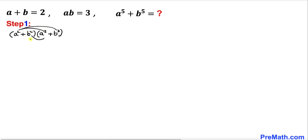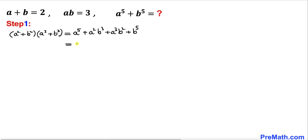Now let's do the double distribution and multiply them out. We get a power 5 plus a squared b cubed plus a cubed b squared plus b power 5. In the next step I'm going to put a power 5 plus b power 5 together, plus a cubed b squared plus a squared b cubed.